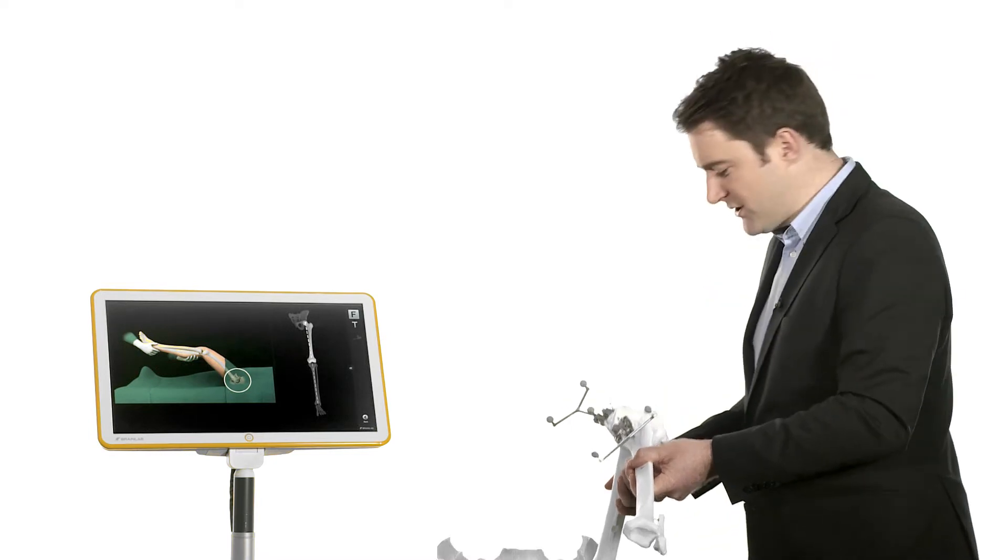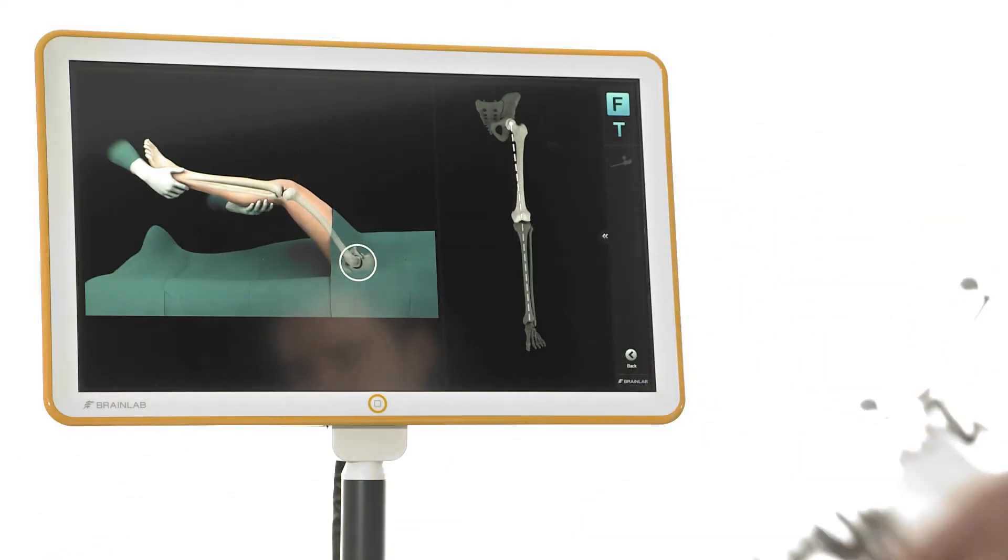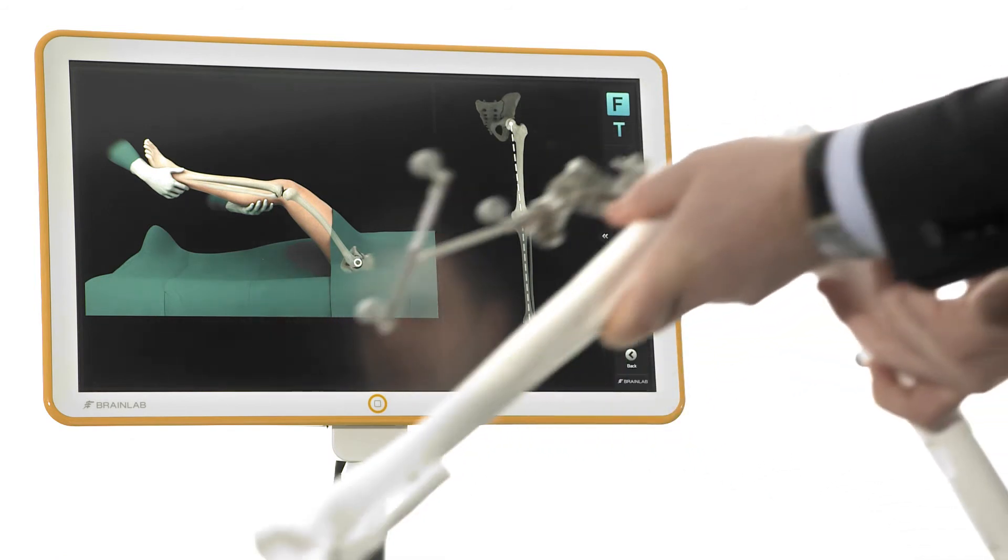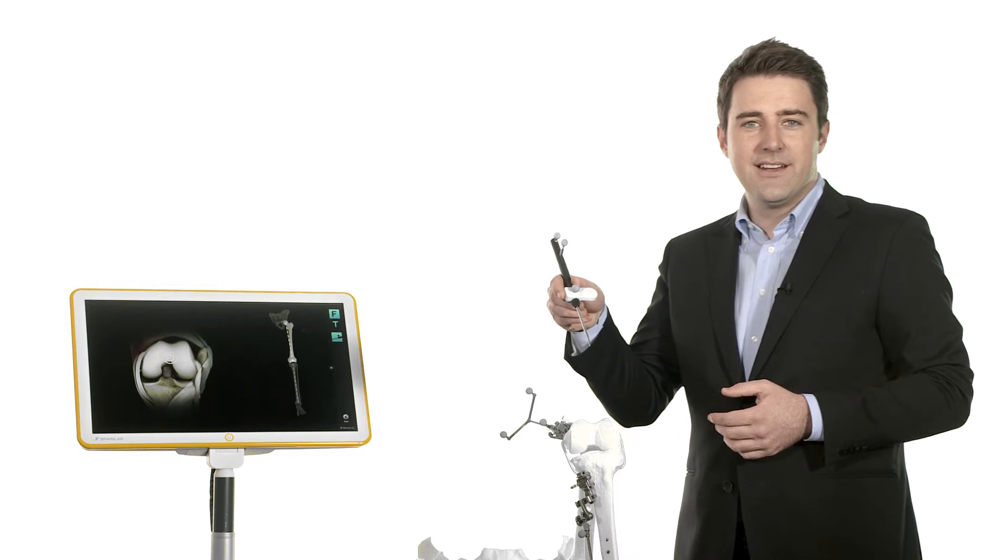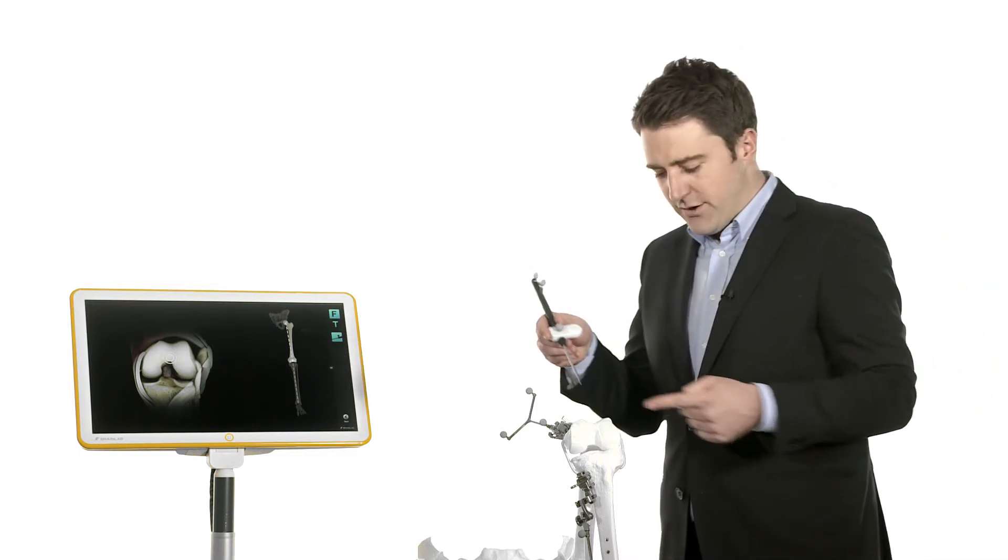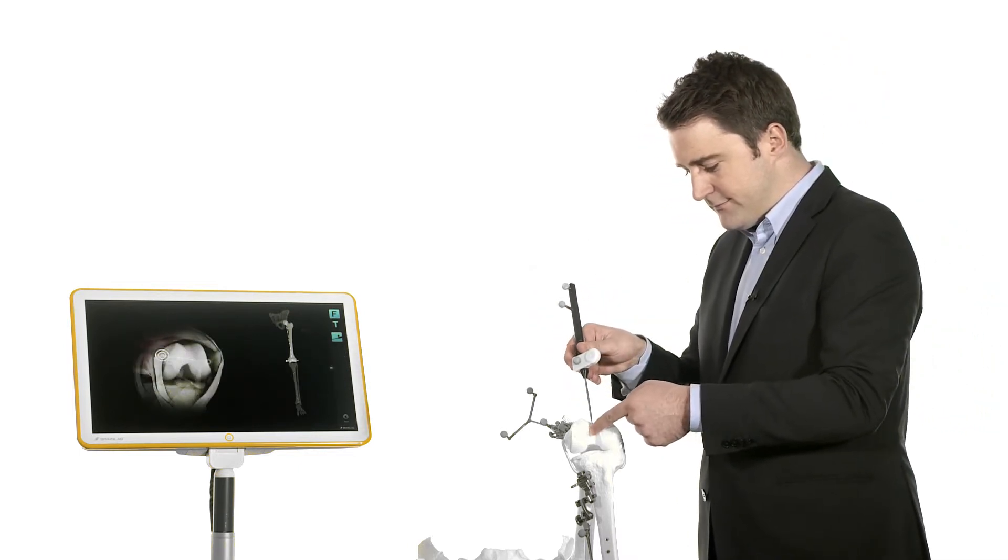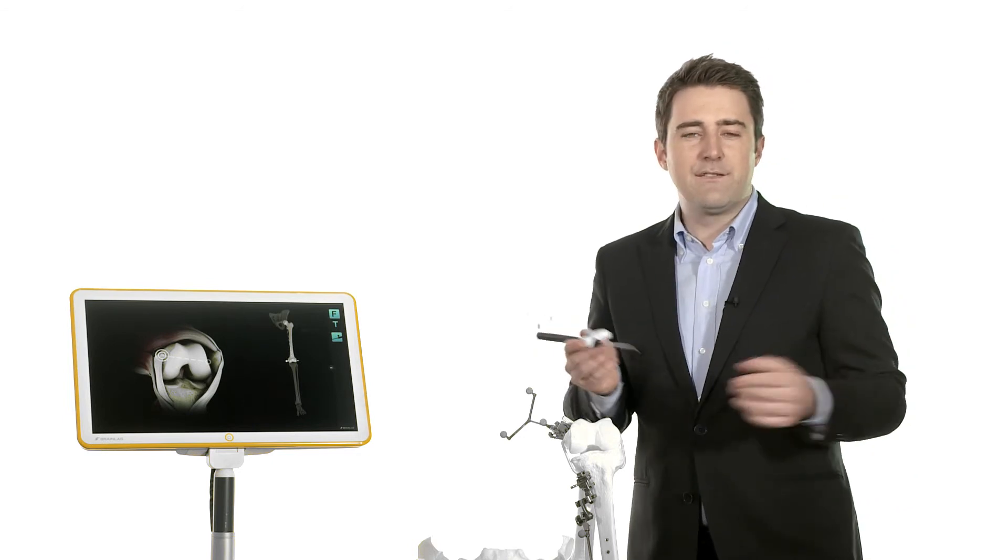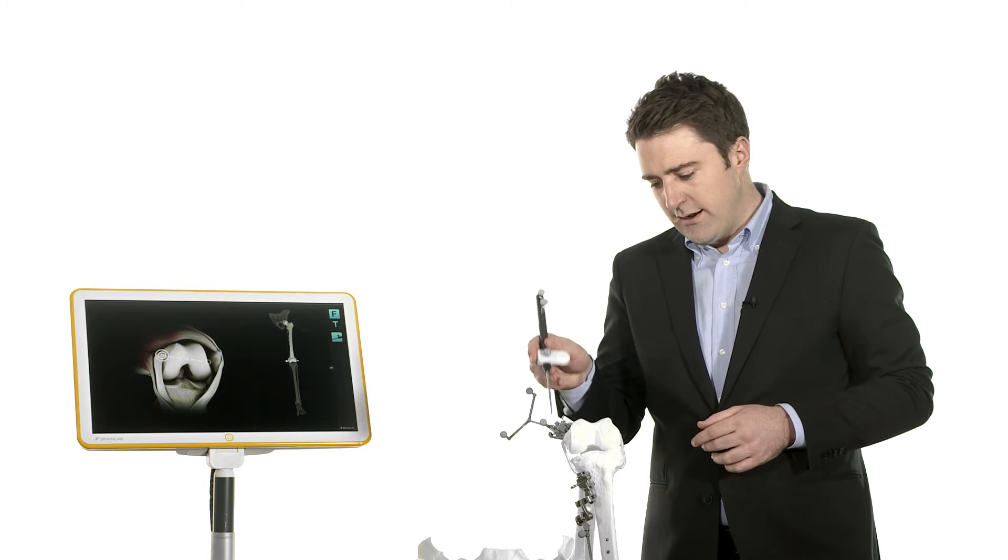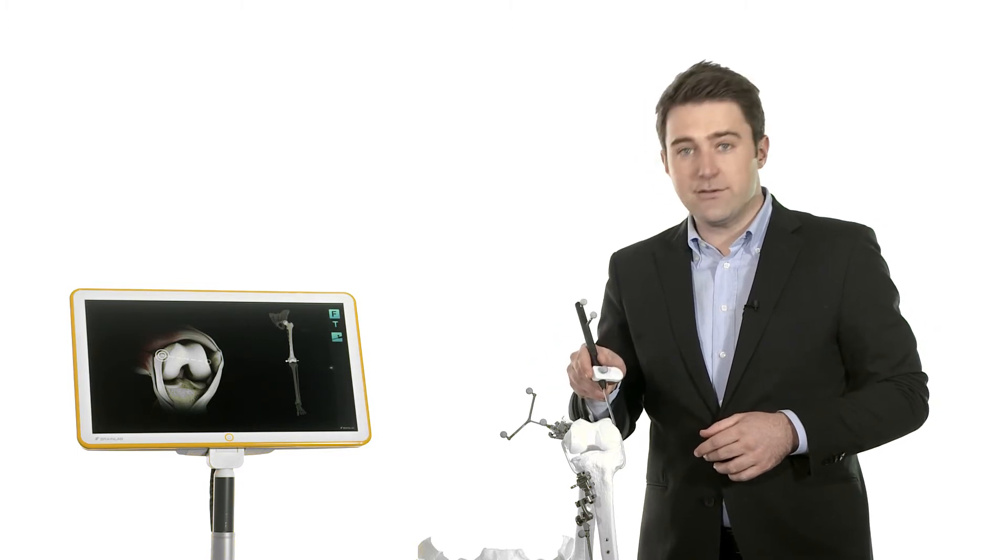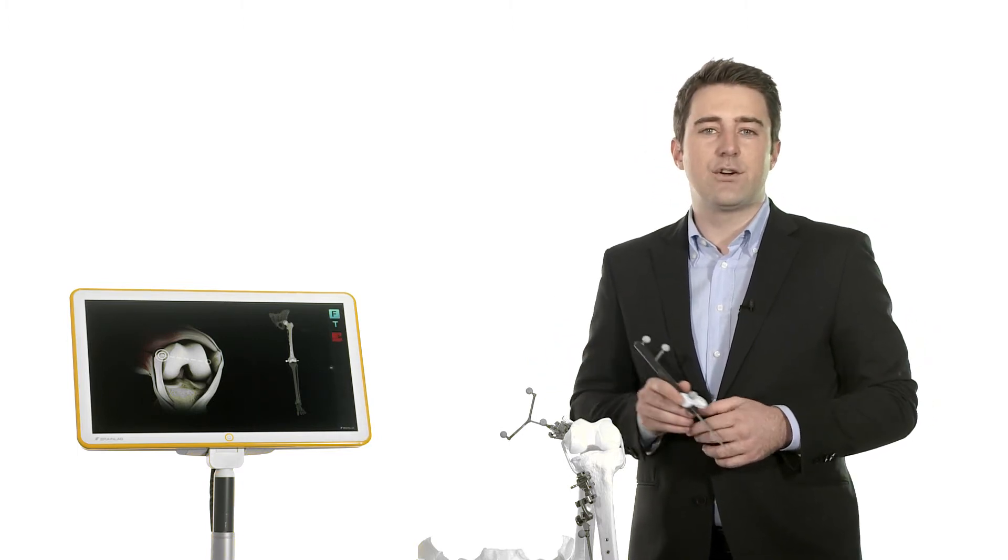Registration begins with the acquisition of the femoral head center. Using the pointer that is equipped with reflected marker spheres, the mechanical axis of the femur is registered. The remaining femoral and tibial anatomical landmarks are subsequently acquired until the software has received all information necessary for calculation.